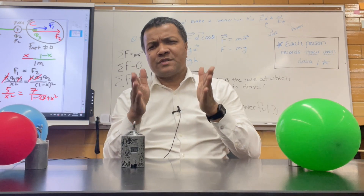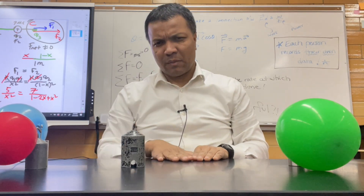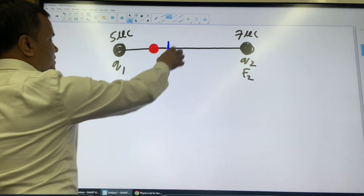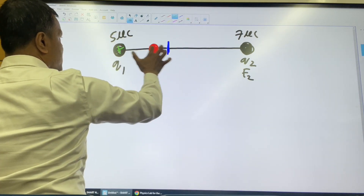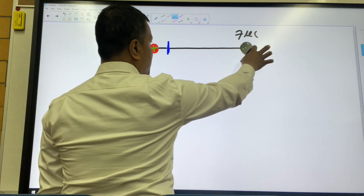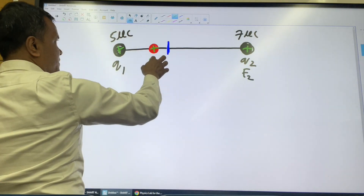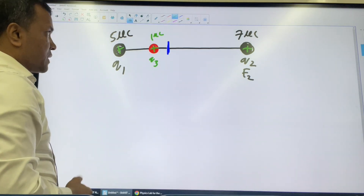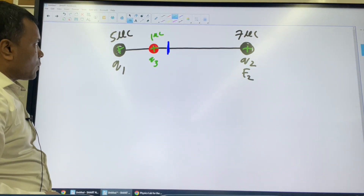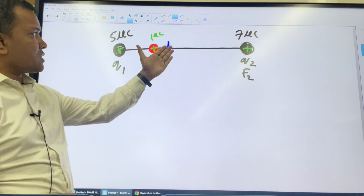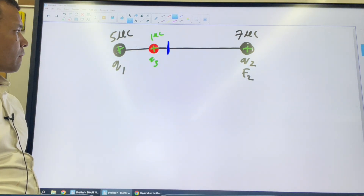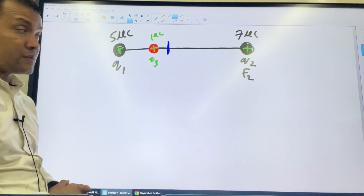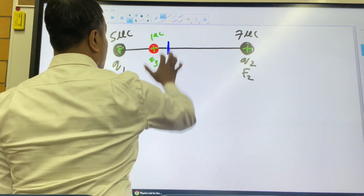Pause the video and solve this problem. All right — we accidentally placed this charge, and everything is positive: this is positive, this is positive, and this is positive at equilibrium. This is q3 and this is one micro coulomb. What happens — will this one be able to push this one to the equilibrium? Yes and no — this is the question. And question number two is similar.